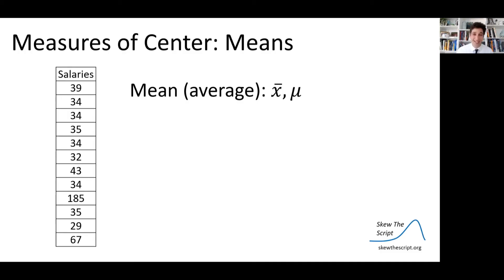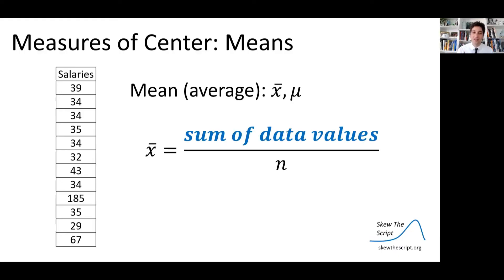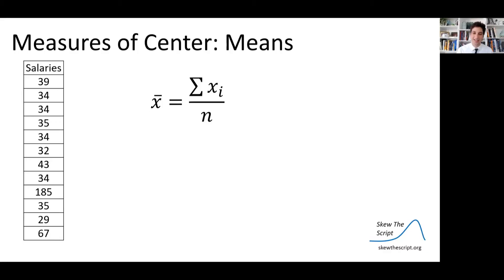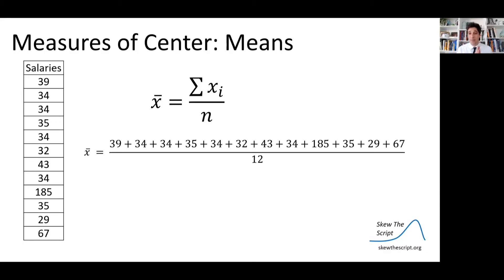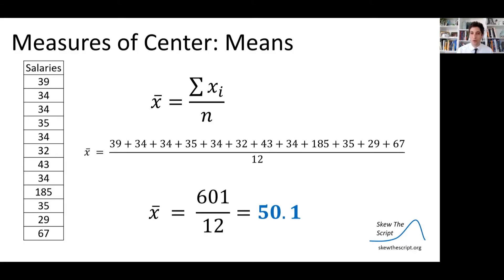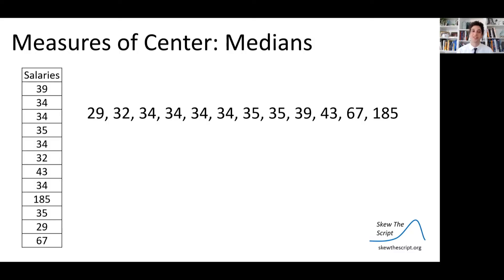One common measure of center for quantitative data like this is to find the mean or the average. The mean is often represented as x-bar or mu. The formula for the mean is the sum of all the data values divided by the number of data points n. If you add up all those salaries, you get 601 divided by 12, giving an average salary of 50.1, or $50,100.